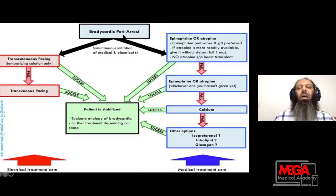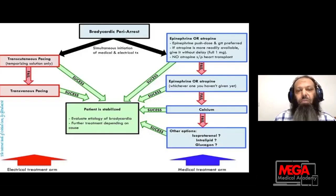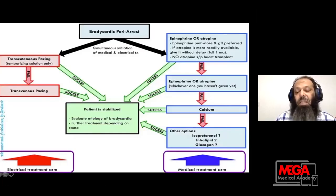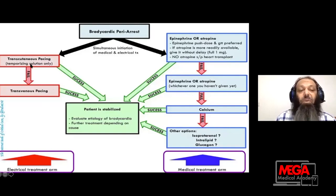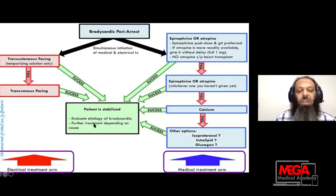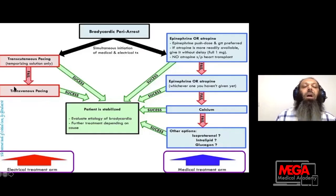Here is the algorithm for peri-arrest bradycardia. The patient is bradycardic with signs of organ hypoperfusion and is shocked. Ideally, you should simultaneously initiate medical and electrical therapy. The electrical arm usually starts with TCP (transcutaneous pacing), but remember TCP is a temporizing solution — it may commonly fail. If it succeeds, stabilize the patient and evaluate the etiology for further treatment. If TCP fails, activate for transvenous pacing. TCP is usually available in the ICU and ER, incorporated into your DC shock monitor.